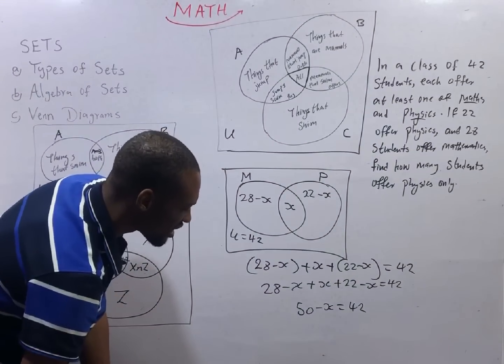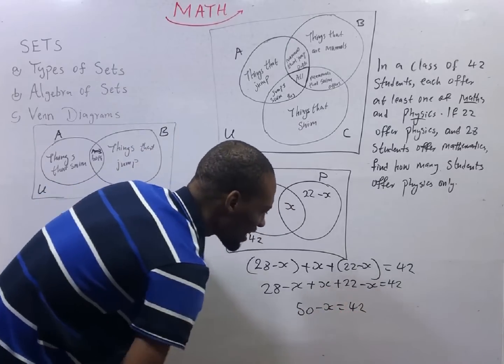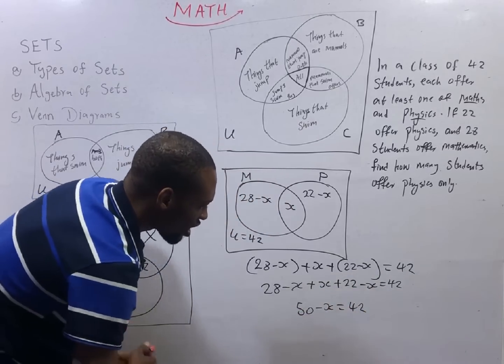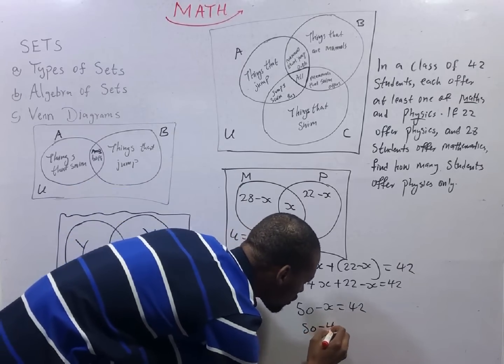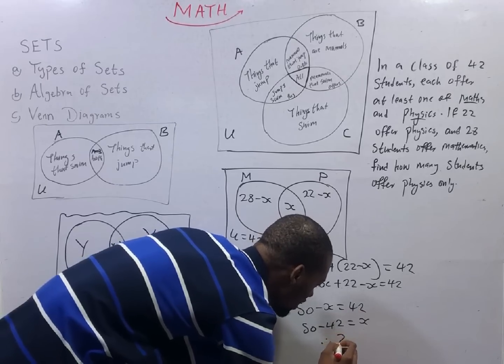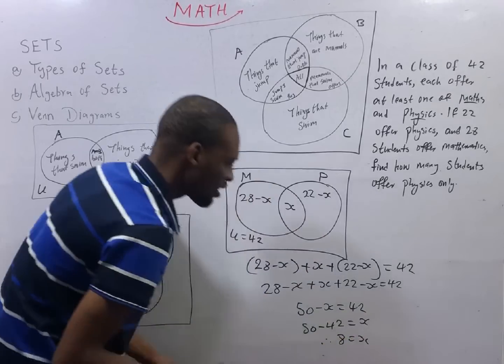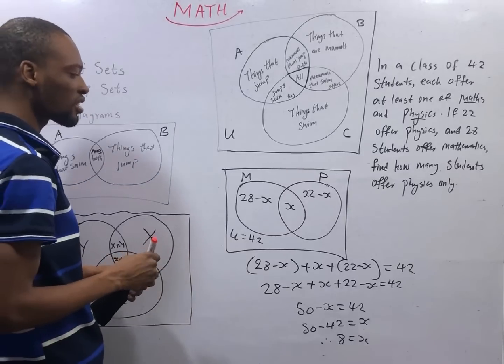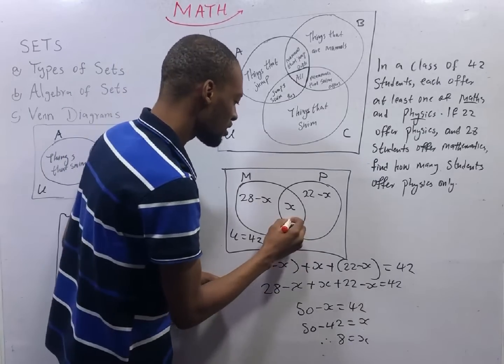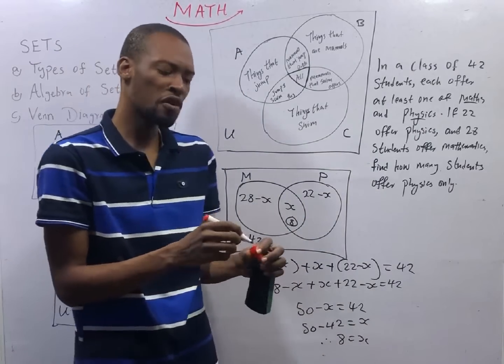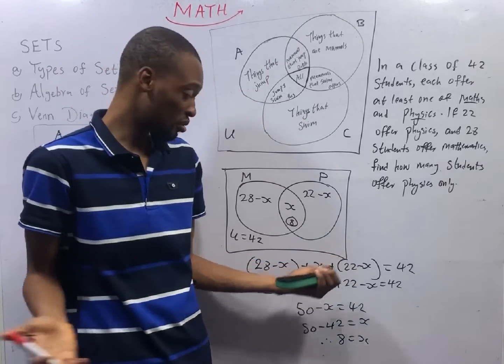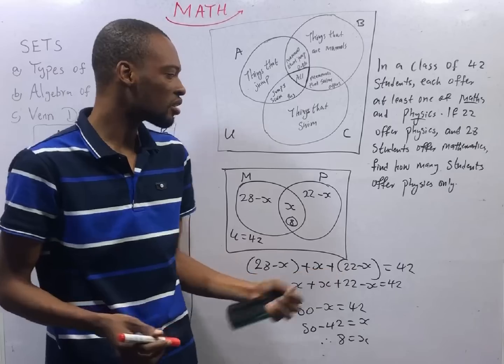Collecting like terms, if I take minus S to the other side and I bring 42 to this side, I will simply have 50 minus 42 is equal S. Therefore, 8 is equal S and S is equal 8. Those who offer both subjects is 8. If we are asked for those who offer both subjects, we will happily say 8.